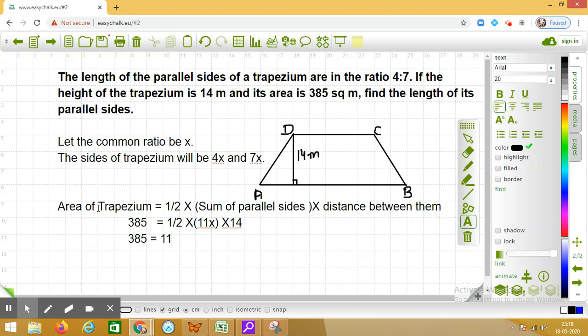So what will be x? This implies x will be equal to 385 divided by 77, which is equal to 5 when you simplify this.